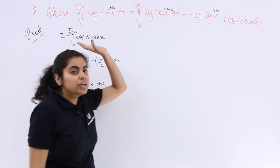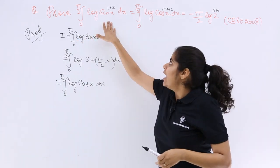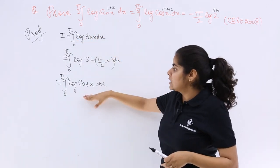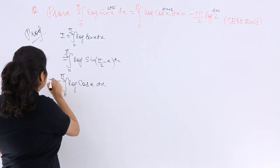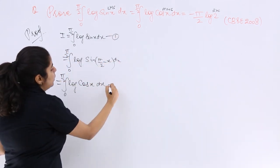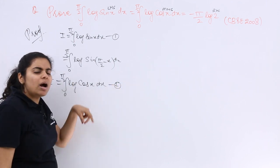Next, 0 to π/2 log sin(90 - θ) equals log cos θ dx. That means you have already proved the initial part that LHS is equal to MHS, both are I, both are the same. Equation number 1, equation number 2.